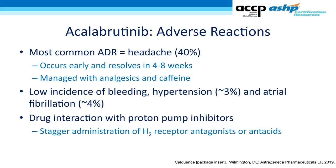With acalabrutinib, the most common adverse drug reaction is headache, occurring in about 40% of patients, often early in therapy. It typically resolves on its own; anecdotally, patients report relief with over-the-counter analgesics or caffeine. Bleeding, hypertension, and AFib occur as with ibrutinib, but at reportedly lower rates. Acalabrutinib's biggest drawback is a drug interaction with proton pump inhibitors; given that it is taken twice daily, careful management — considering H2 receptor antagonists or antacids and appropriate spacing — is required.